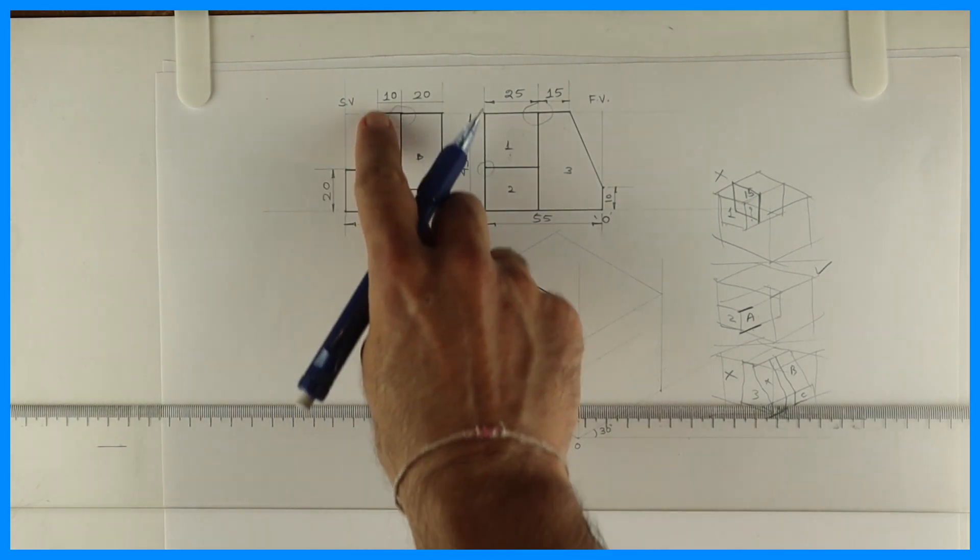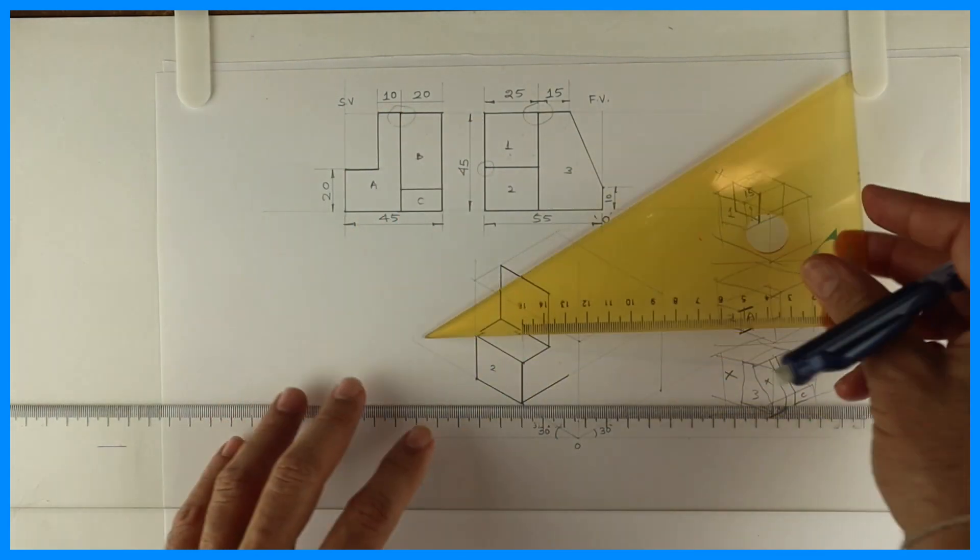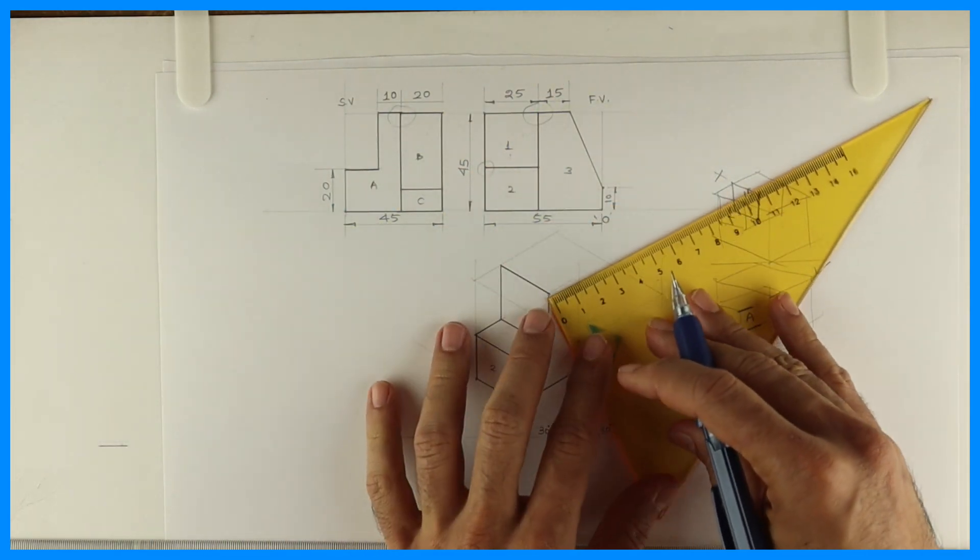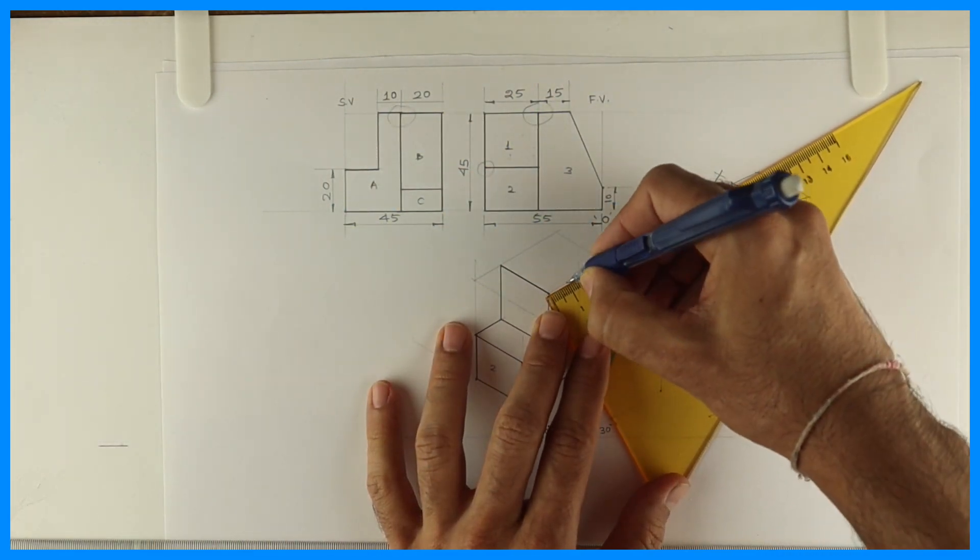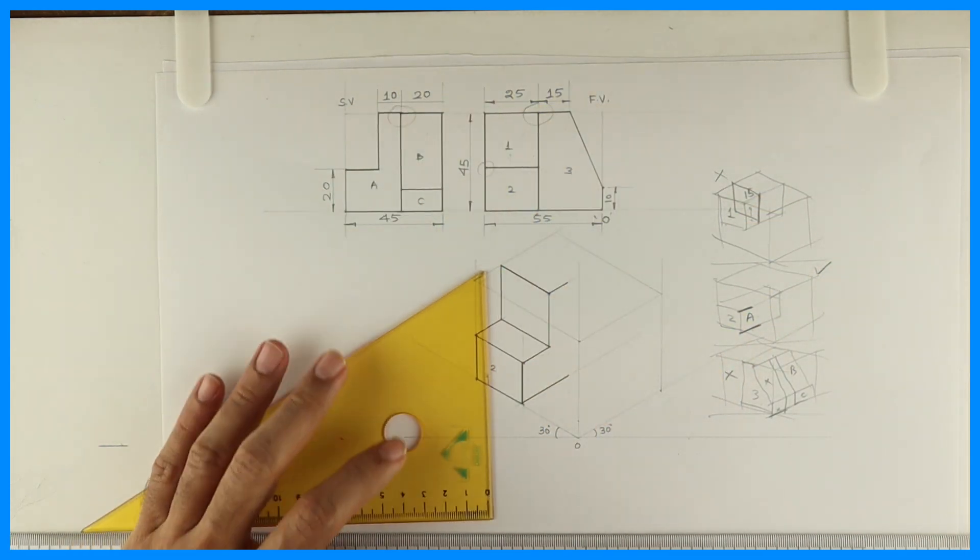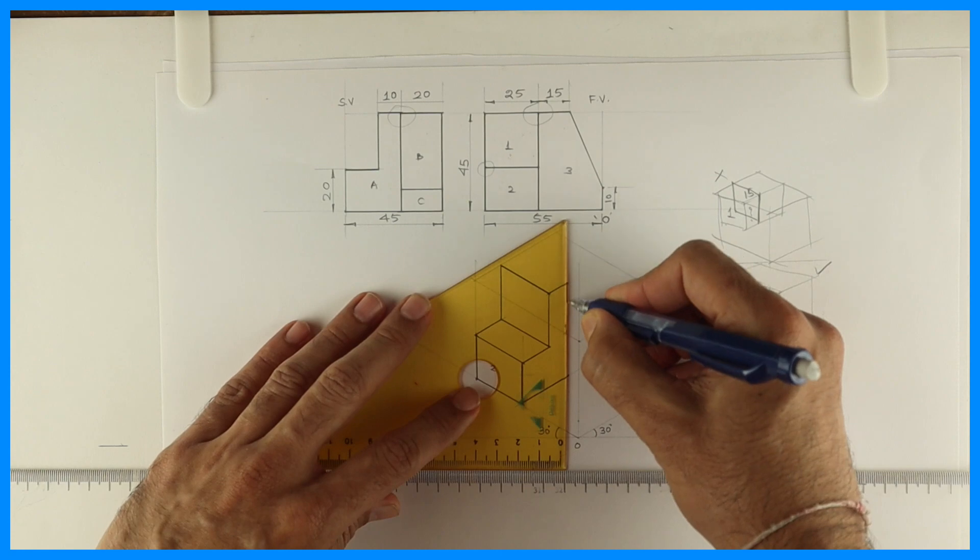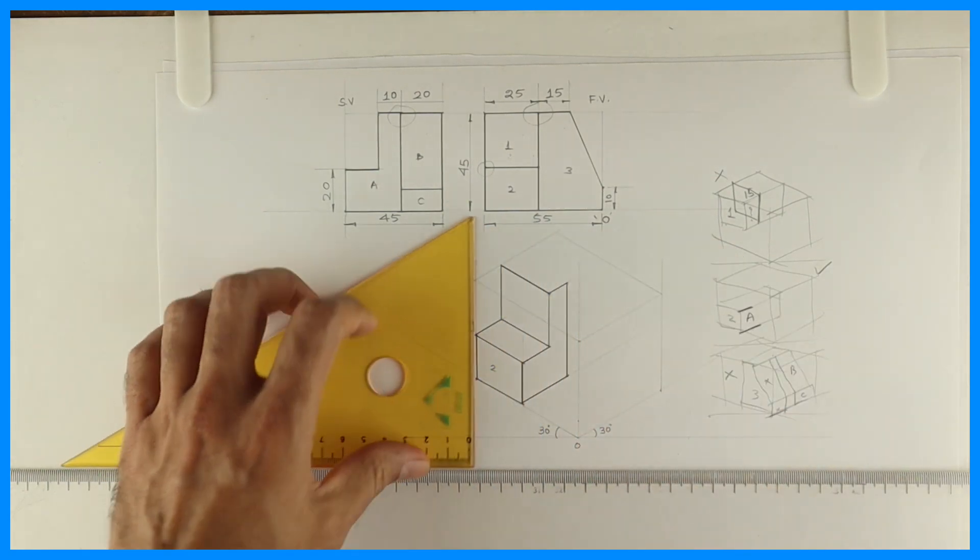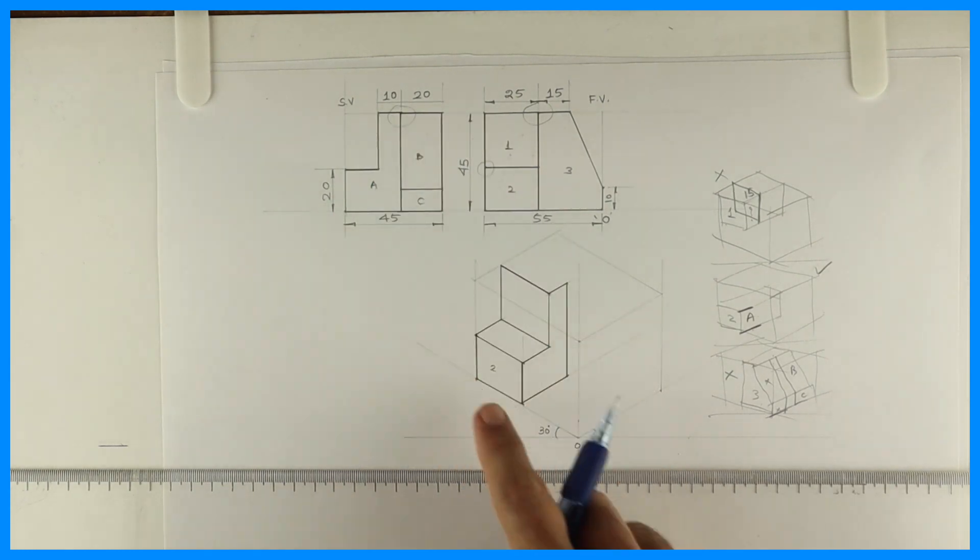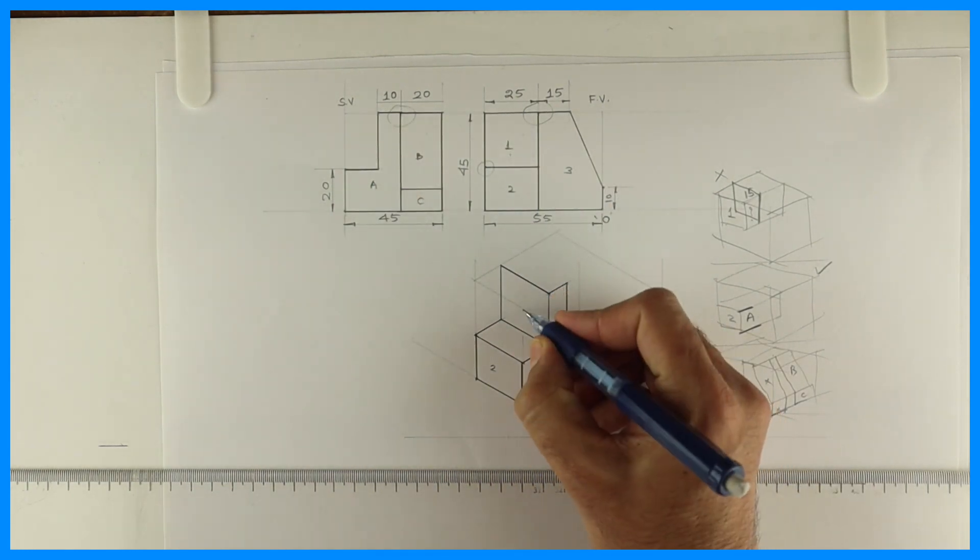Now again if you see, width is 10. So you'll draw 10 and draw this line vertical. This is how you'll get part A. One and two.